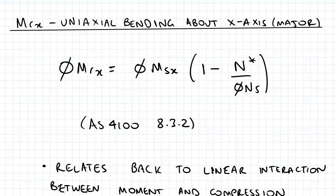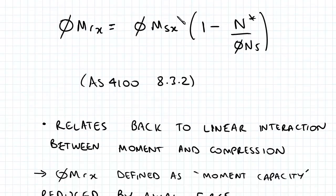So we have MRX which is the uniaxial bending about the X axis and this is the formula straight from AS4100 8.3.2 and what we can see is that it relates back to the linear interaction between moment and compression.